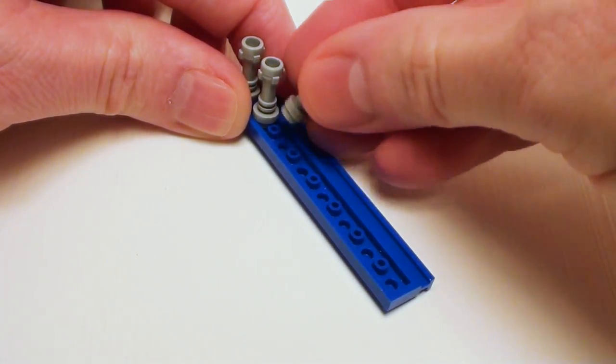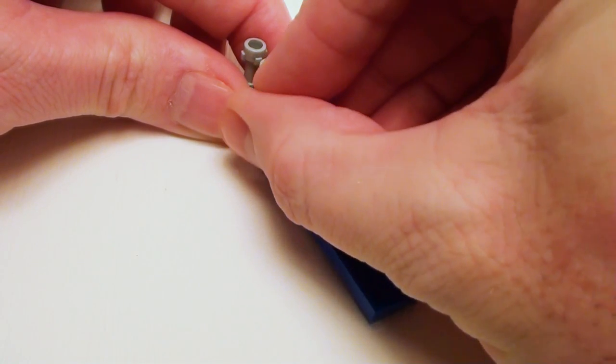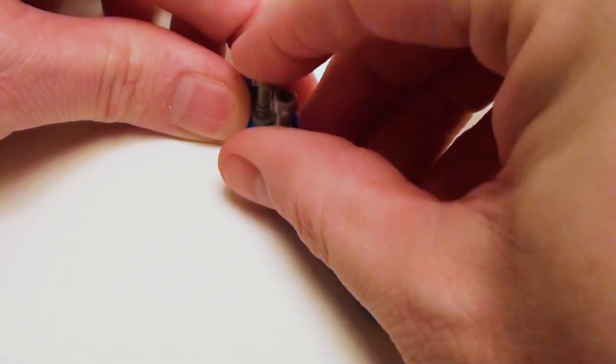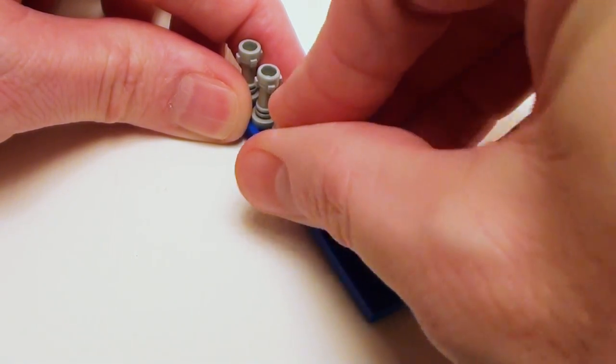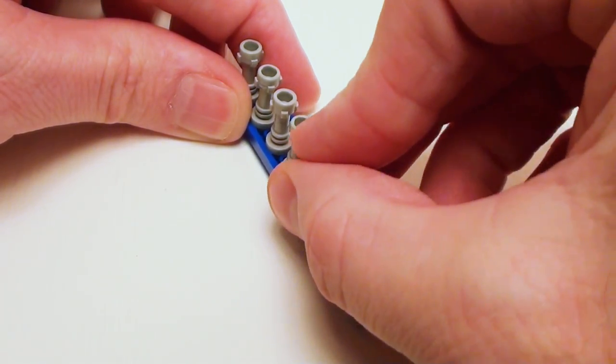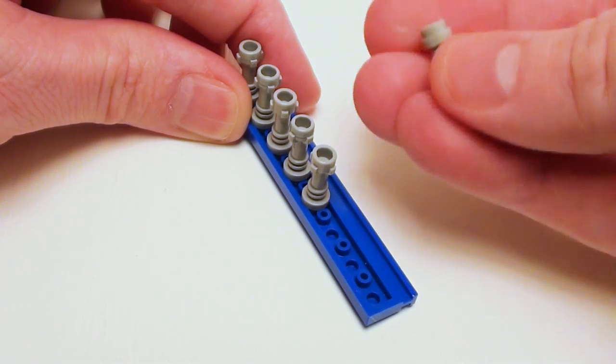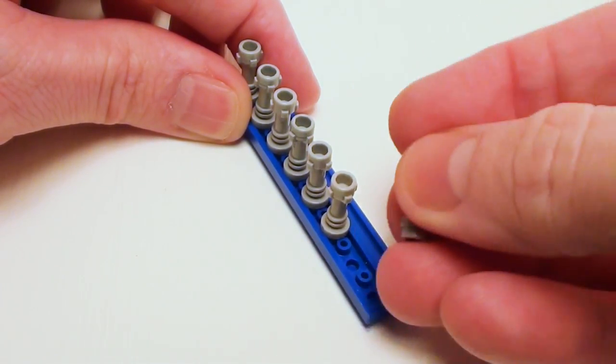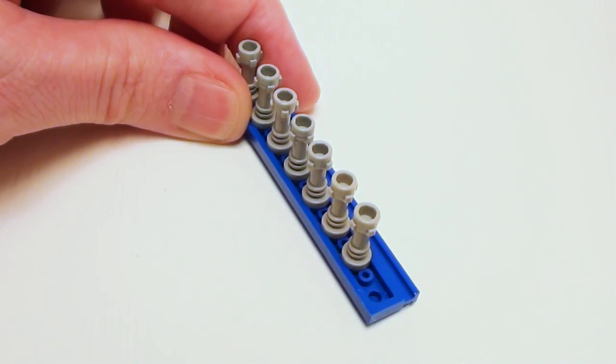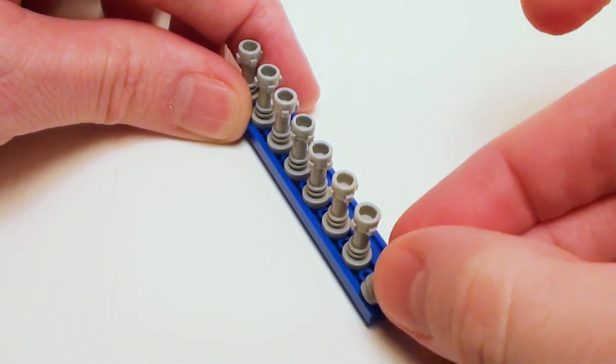Now these are going to represent the treads for the ladder. So we're going to have to set all these down in there, and I'm sorry, no speed build today. Set all those in. You're going to need eight of these in total.